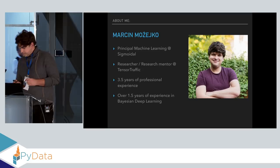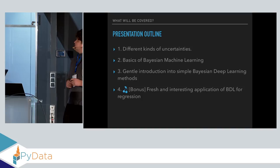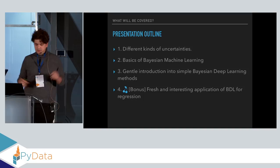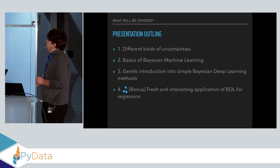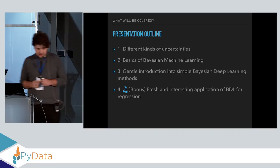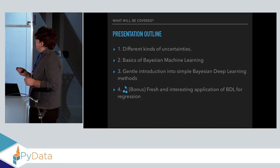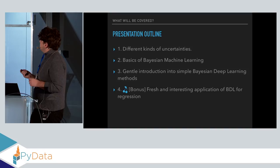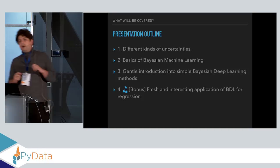Let me briefly outline what I'd like to tell you about today. First, I will start from uncertainties — I'll show you examples and how they differ, because there is not a single uncertainty but different kinds of them. Then I'll briefly show you the basics of Bayesian machine learning, and we'll gently dive into Bayesian deep learning. At the end, I'll share something interesting which I found recently — it shows that machine learning actually just completes a full cycle in some way, and it's also connected to Bayesian deep learning.